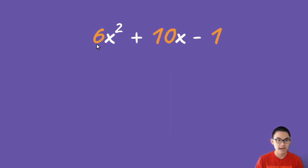And so if we have 6x squared plus 10x minus 1, then the discriminant is b squared minus 4ac with this being a, b, and c. And so b squared is just 10 to the power of 2, minus 4 times a, which is 6, and c, which is negative 1.